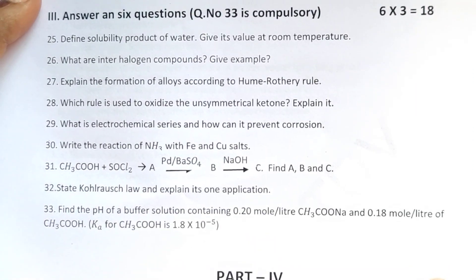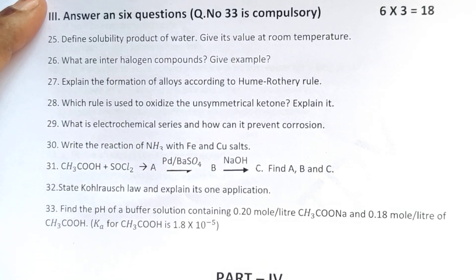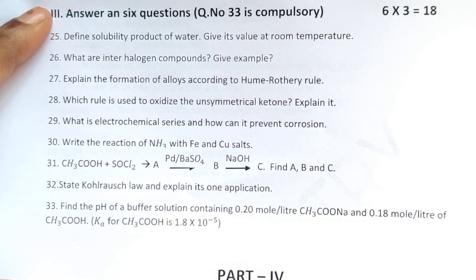Next, part three. Three mark questions. Answer any six questions and question number 38 is compulsory. Twenty-five, define solubility product of water. Give its value at room temperature. Then, what are interhalogen compounds? Give example. Explain the formation of alloys.